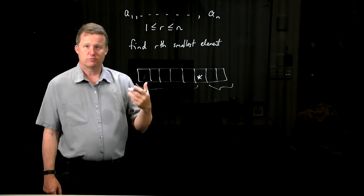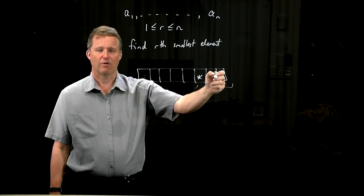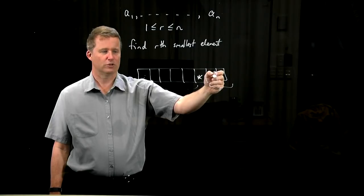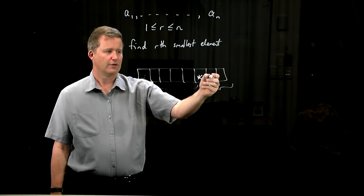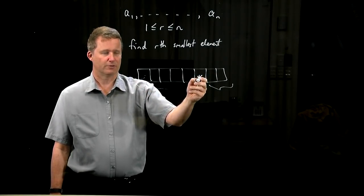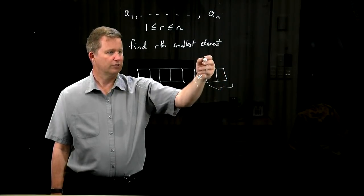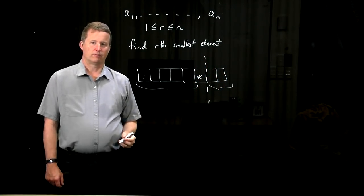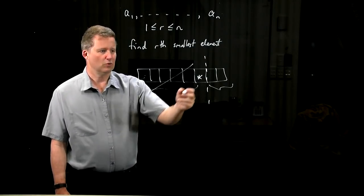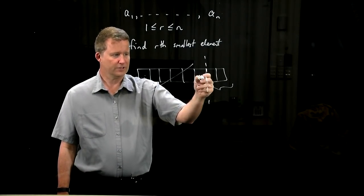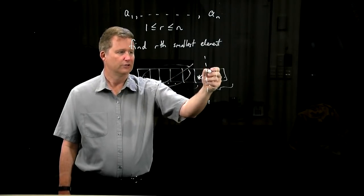If we're trying to find the rth smallest element and r is a bigger index than where this ends up, so it's over here somewhere, then we know that that rth smallest element doesn't lie over here. All these elements are less than or equal to the pivot, everything here is greater than or equal to the pivot, so the rth smallest element actually has to lie over here. So we can recursively look over here and throw away this half completely. Similarly, if r is smaller than here, we know that these elements are all too big, so it must in fact lie in here somewhere. So we would choose this half and throw away that one.